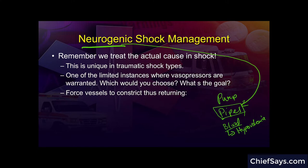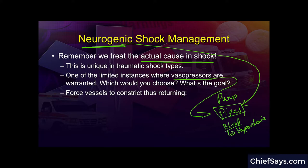Neurogenic shock presents a relatively isolated case in trauma where we can consider vasopressors as a first-line treatment. It's a problem with the pipes — if we just give fluids, the pipes will still be vasodilated and blood will pool in the lower extremities and never return to the heart. Fluid by itself is not the answer here, whereas in most trauma shock, fluid is the answer and not pressors. Here we want to use a combination of some fluid and drugs, with the goal of increasing the constriction of the pipes to return the blood volume still in the body back into circulation and increase perfusion.